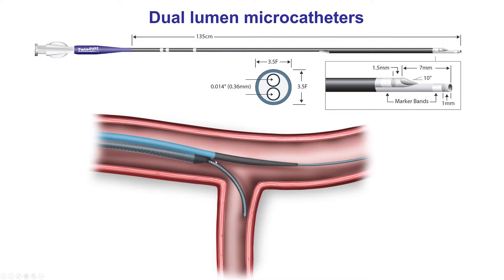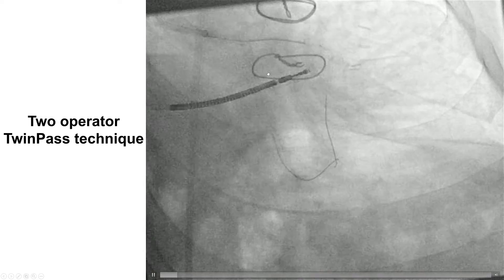To illustrate this: we have the side branch, and we advance the dual-lumen microcatheter over the pre-existing wire and use the side port over-the-wire lumen to wire into the branch. Twin-Pass Torque is the only dual-lumen microcatheter currently available in the United States.